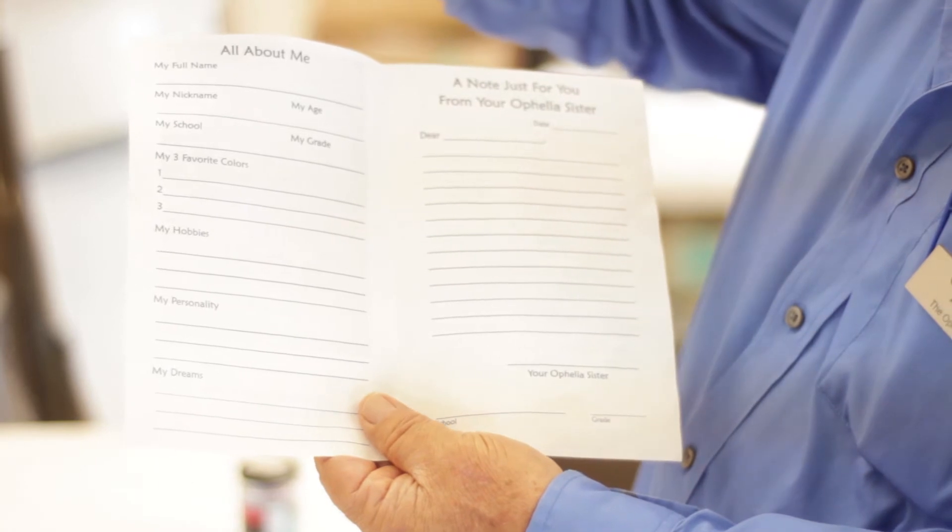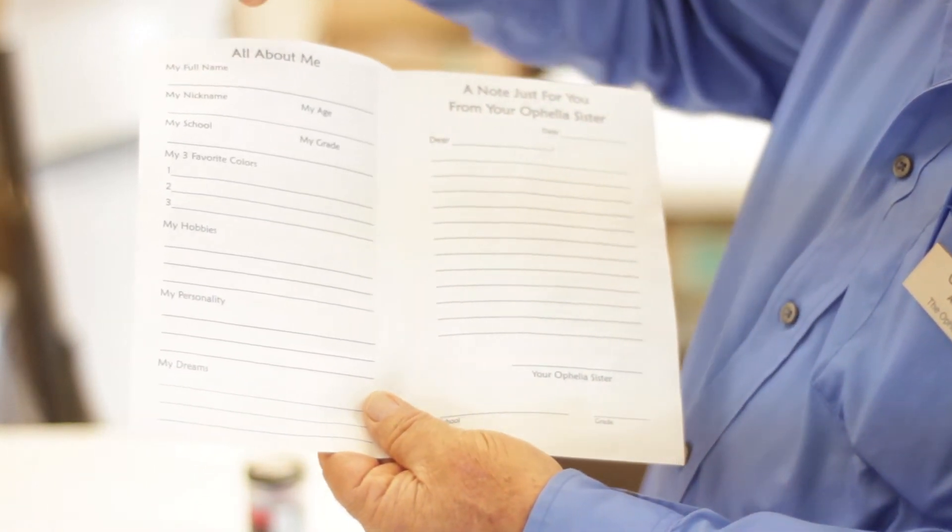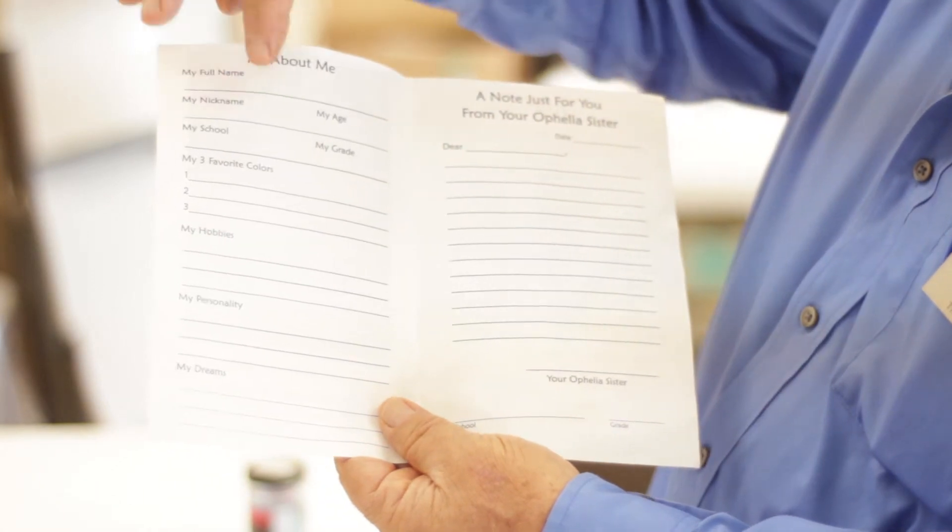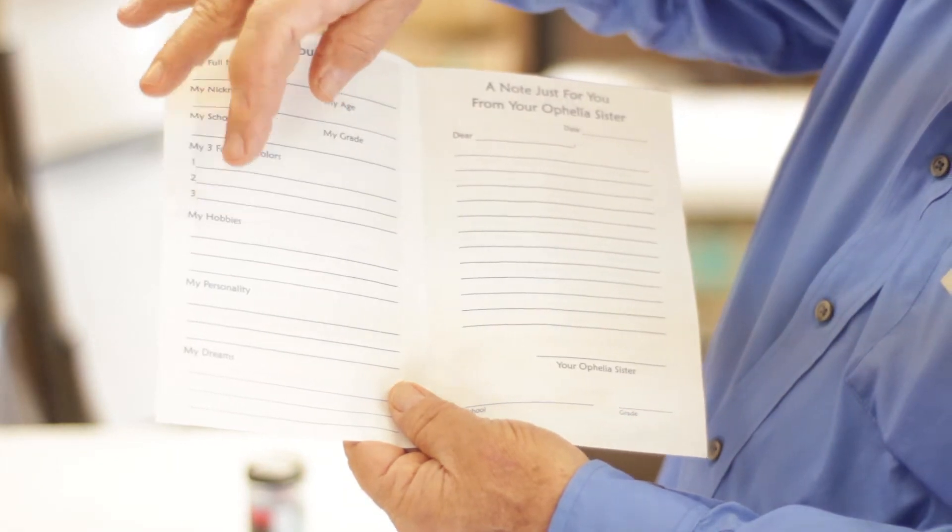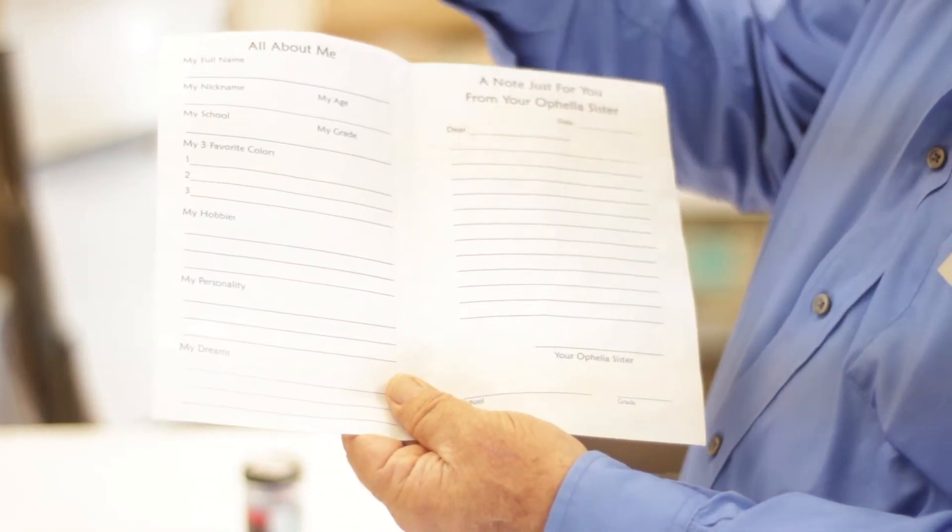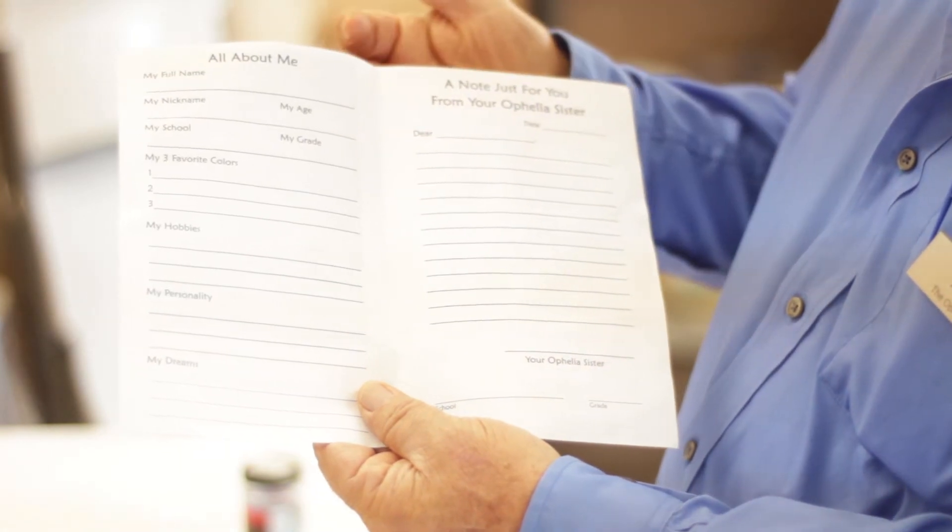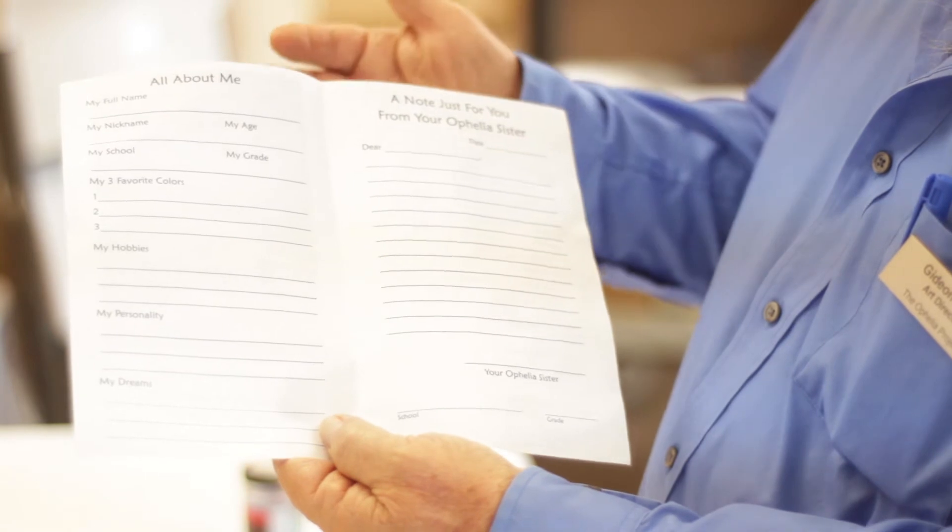On the first page, it's all about me, which is you, the Ophelia girl. You're going to write your name, your nickname, your school, your three favorite colors, your hobbies, your personality, and your dreams. The more you write, the more information there is for your Ophelia sister to create a piece of art for you.